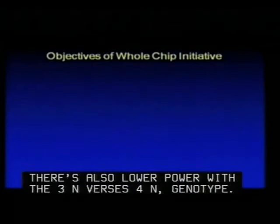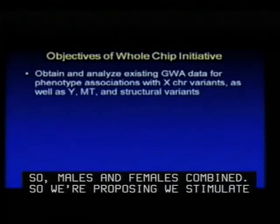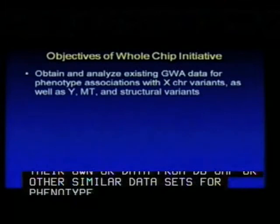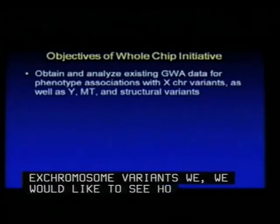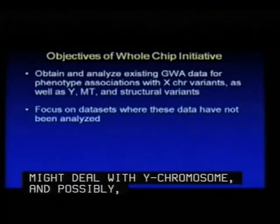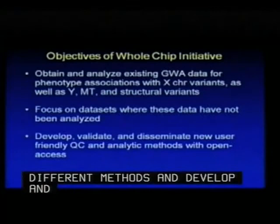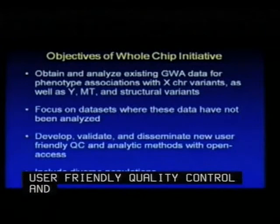We're proposing to stimulate this area by asking investigators to obtain and analyze existing genome-wide association data — either their own or data from dbGaP or similar datasets — for phenotype associations with X chromosome variants primarily. We'd also like to see how folks might deal with Y chromosome mitochondrial variants and possibly structural variants. Focus on datasets where these data have not really been analyzed, and develop, validate, and disseminate possibly new user-friendly quality control and analytic methods with an open-access model. We would ensure inclusion of diverse populations.